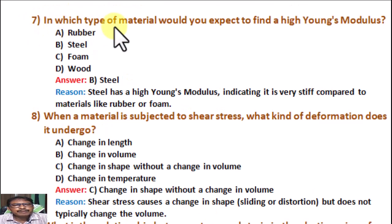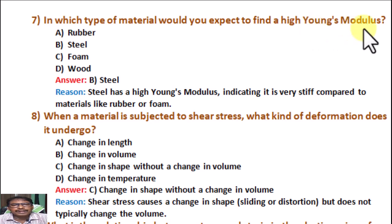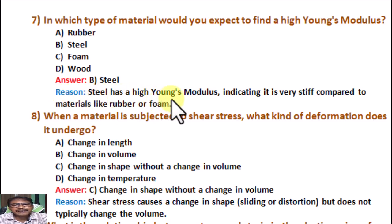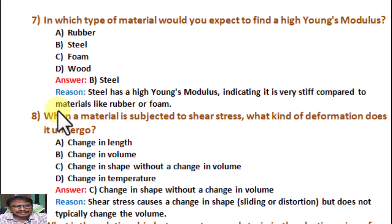Question number 7. In which type of material would you expect to find a high Young's modulus? A: Rubber. B: Steel. C: Foam. D: Wood. Correct answer is B, Steel. Reason: Steel has a high Young's modulus, indicating it is very stiff compared to other materials like rubber or foam.